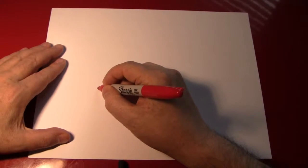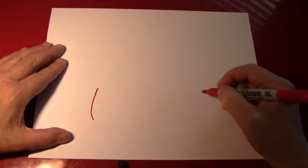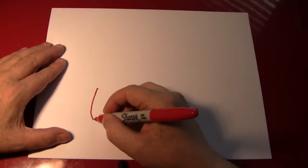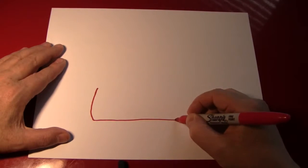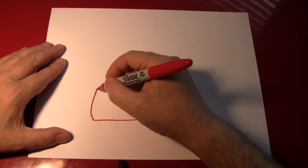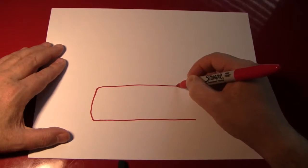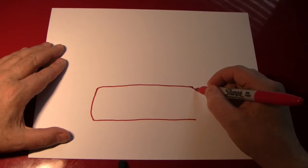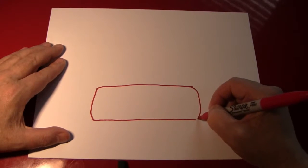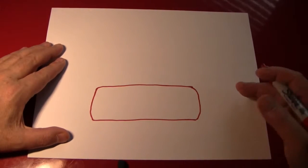A hot dog bun is kind of thick and has a curved end like that. Extend that line straight across your page and then make a similar end on the other side. And that's really all you need for a hot dog bun.